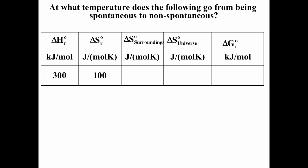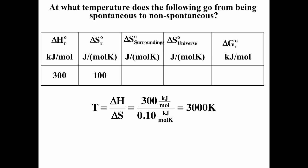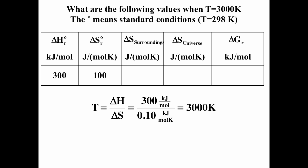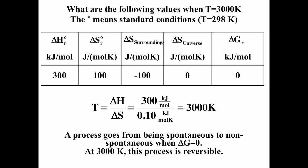We just plug values into T = ΔH / ΔS to find the transition temperature. Be careful with units: ΔH is typically in kJ/mol while ΔS is typically in J/(mol·K), so you must convert one of them. At 3000 K we find the transition temperature for the first example. This approximation may not be great over such a wide temperature range, since ΔH and ΔS will not remain temperature independent.